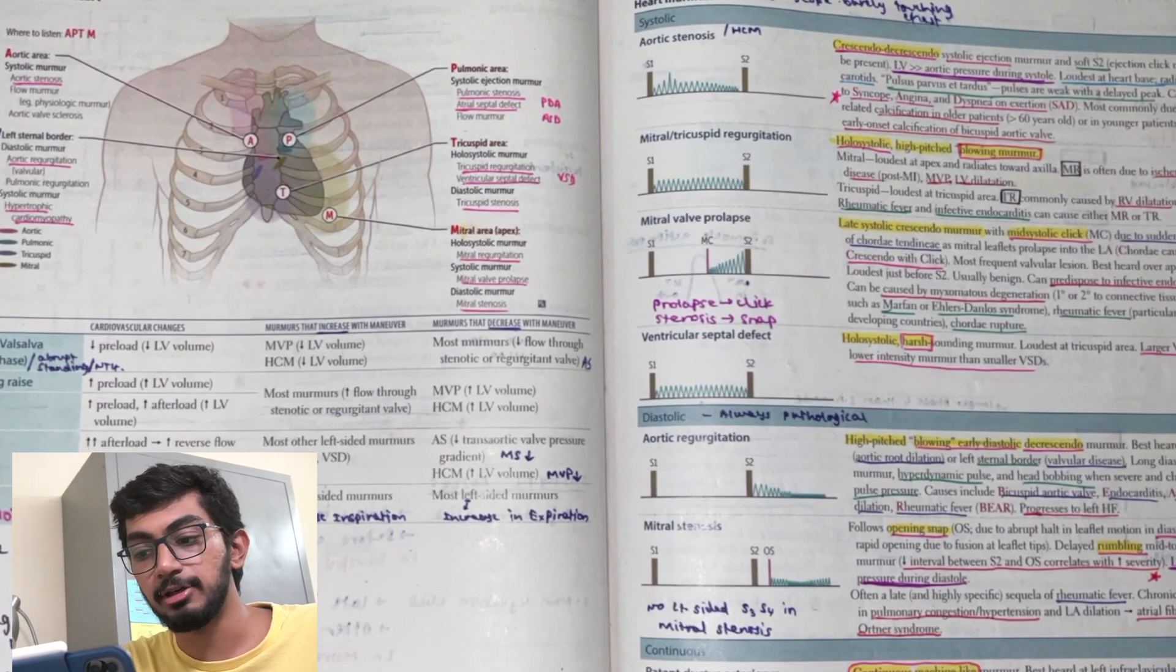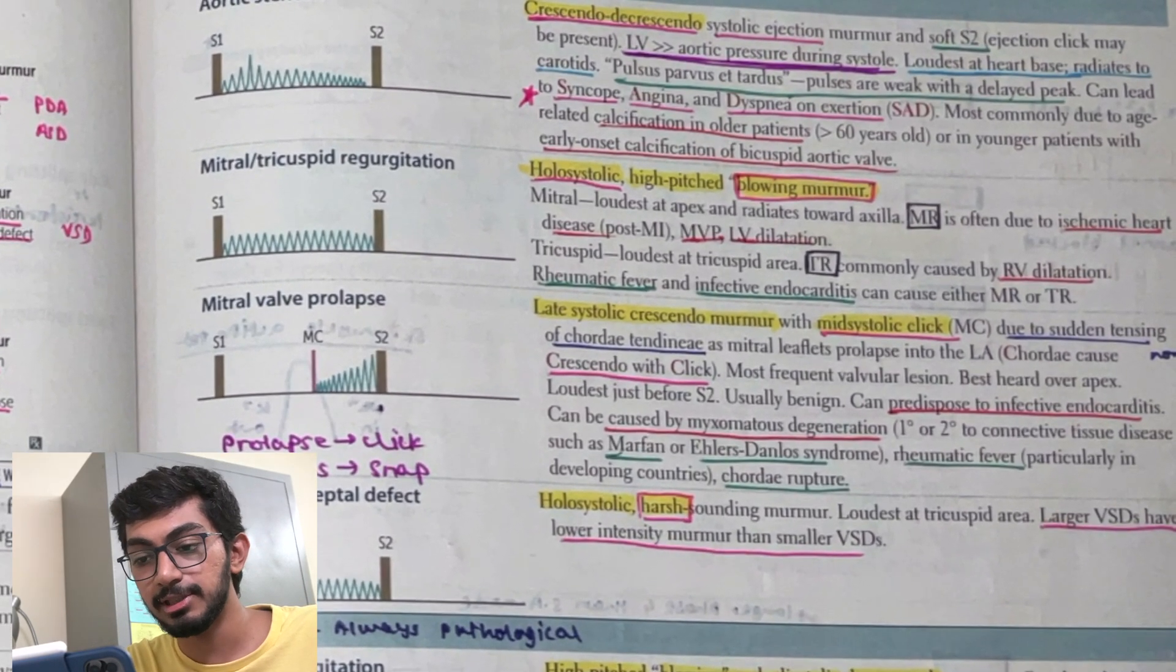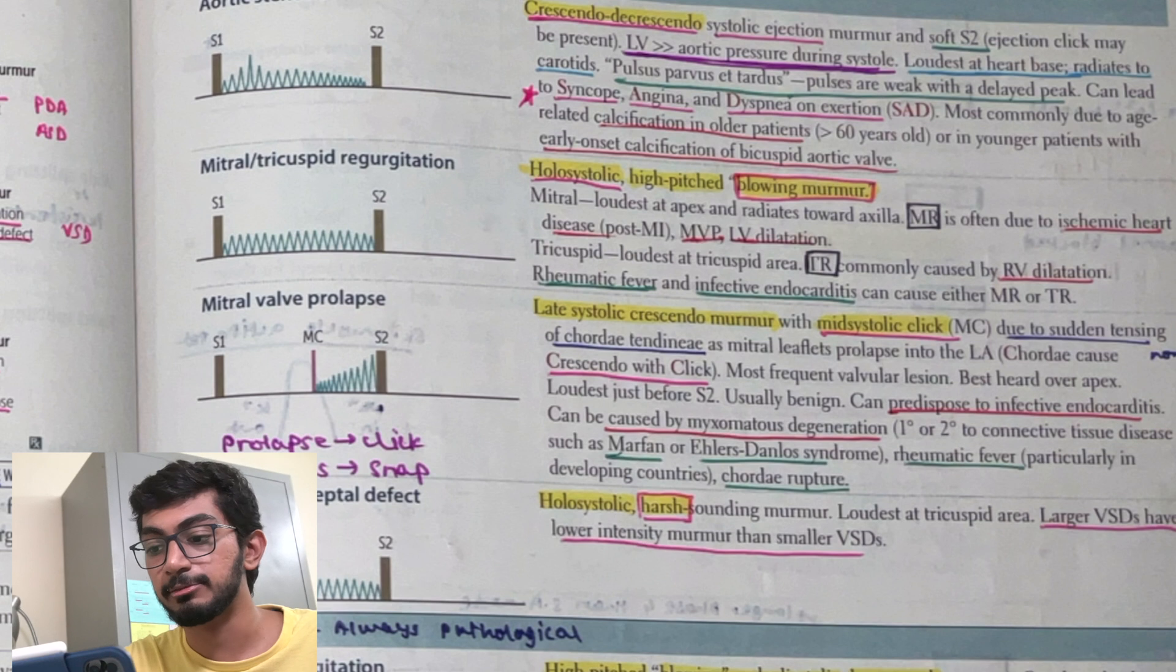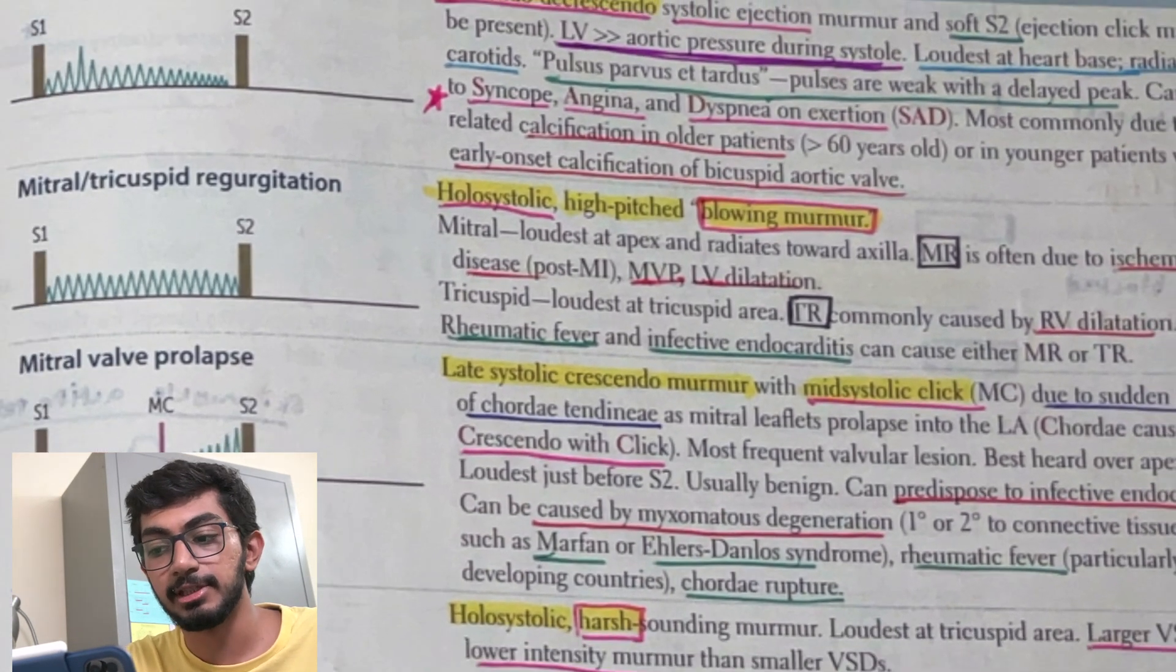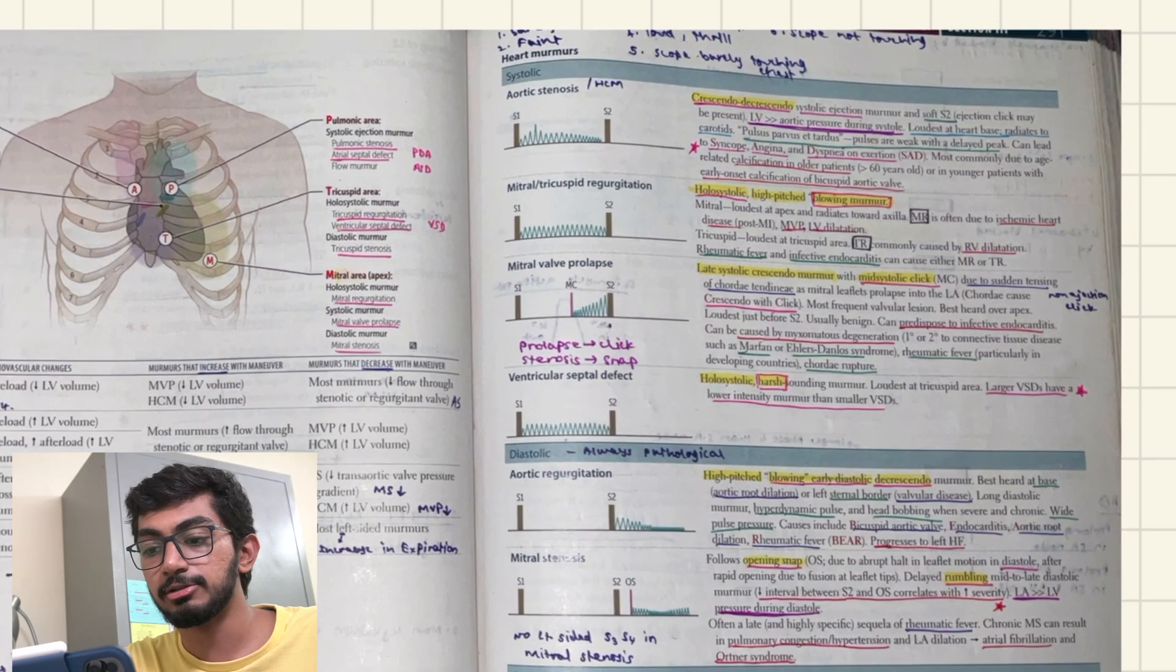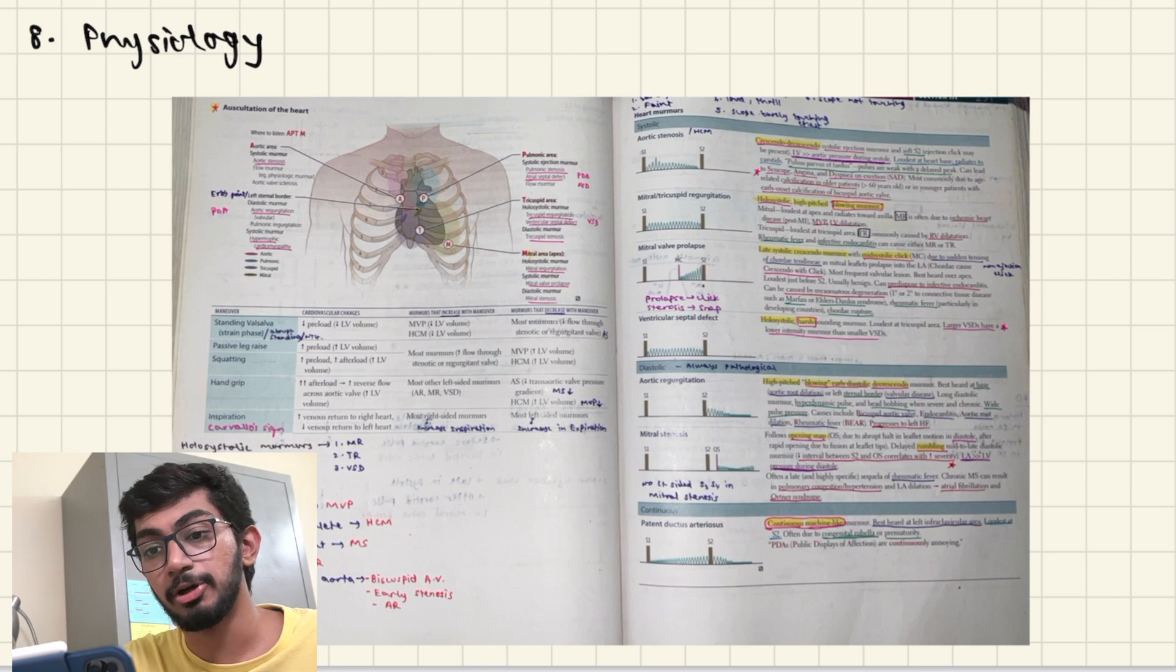Next is Physiology. This is again from the Cardiology section. It also gives the pathology with it, like the different types of murmurs. And some presentations are also given. Like aortic stenosis is presented with syncope, angina, dyspnea on exertion. And there is calcification in older patients. So this is something that will help you remember such topics in a clinical point of way.